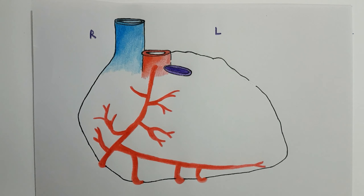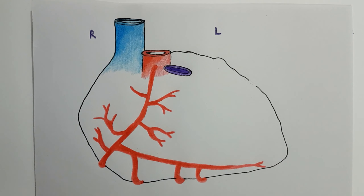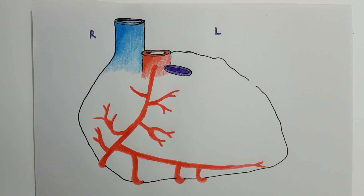Now let us talk about the right coronary artery. As we have already discussed the features of the coronary arteries, we know that the right coronary artery is smaller than the left coronary artery. We will now discuss the origin, course, termination, and the respective branches of the right coronary artery.